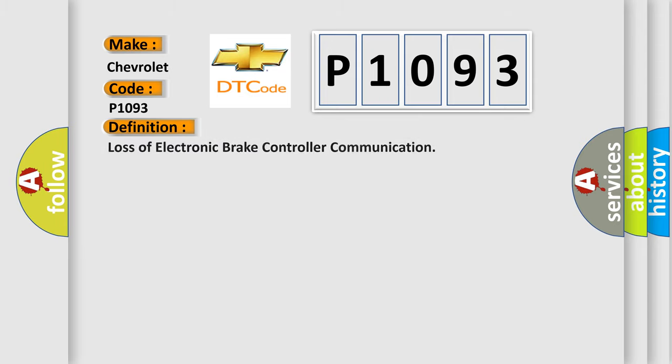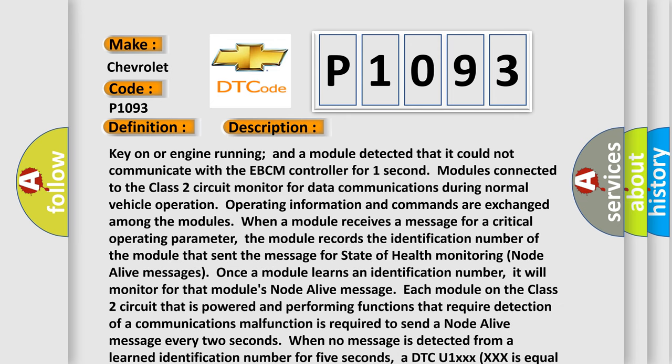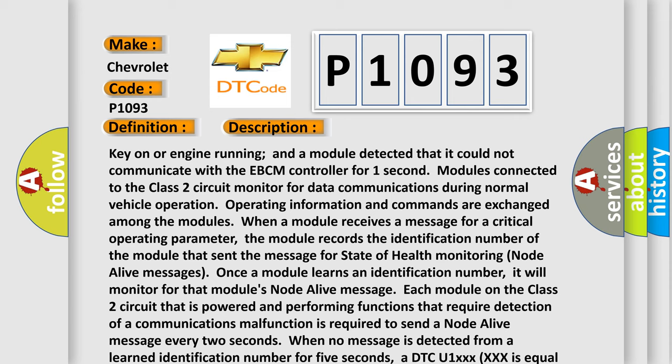The basic definition is: Loss of electronic brake controller communication. Key on or engine running, and a module detected that it could not communicate with the EBCM controller for one second. Modules connected to the Class 2 circuit monitor for data communications during normal vehicle operation. When a module receives a message for a critical operating parameter, it records the identification number of the sending module for state-of-health monitoring. Each module on the Class 2 circuit is required to send a node alive message every 2 seconds. When no message is detected from a learned ID for 5 seconds, a DTC U1XXXX is set.